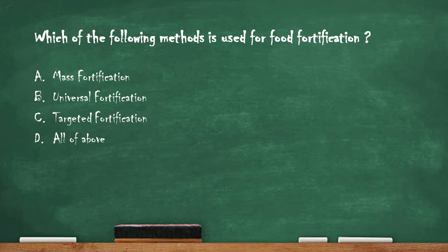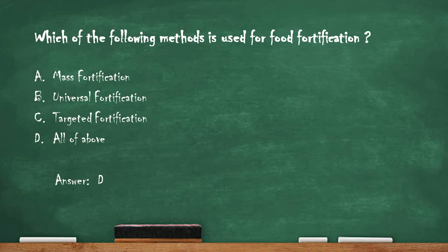Next question: which of the following methods are used for food fortification? Option A: mass fortification. Option B: universal fortification. Option C: targeted fortification. Option D: all of the above. The right answer is option D — all of the above. Mass fortification, universal fortification, and targeted fortification are all methods used for food fortification.